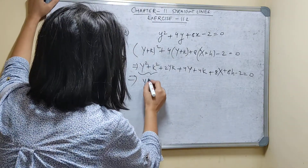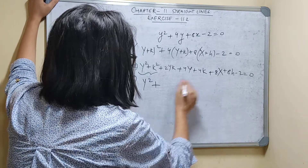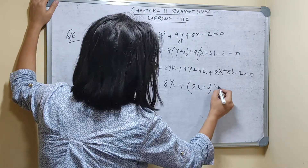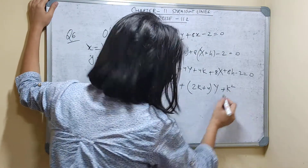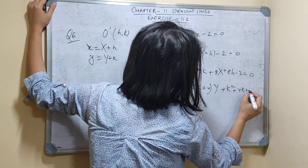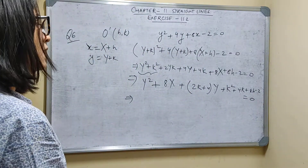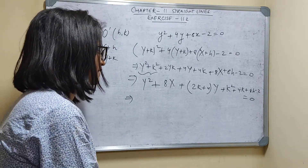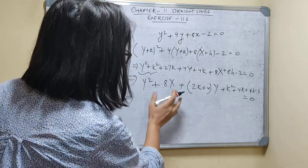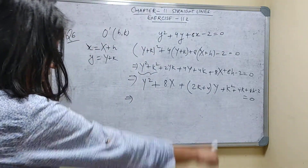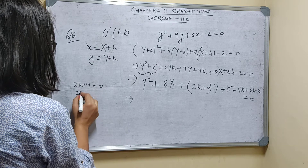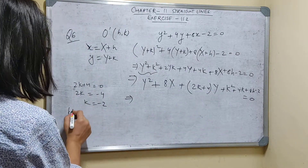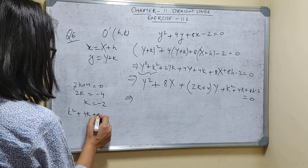Separating: Y² + 8X + (2K + 4)Y + (K² + 4K + 8H - 2) = 0. To get the form Y² + AX = 0, the Y coefficient must be zero and the constant must be zero. Setting 2K + 4 = 0 gives K = -2. Substituting K = -2 into the constant: 4 - 8 + 8H - 2 = 0.